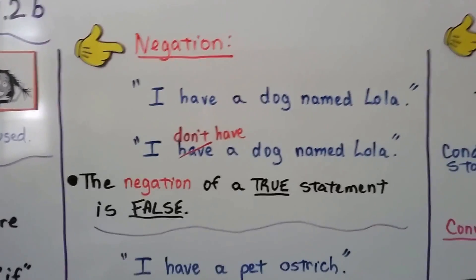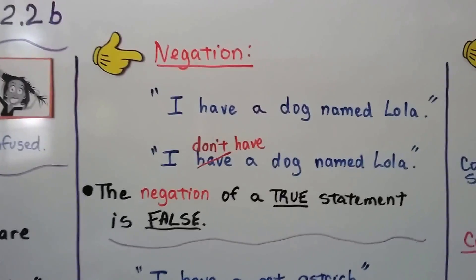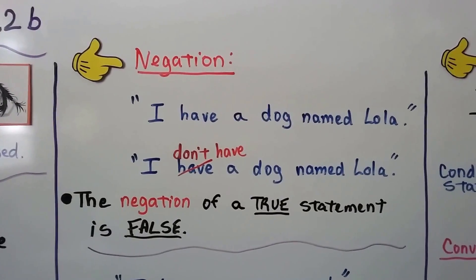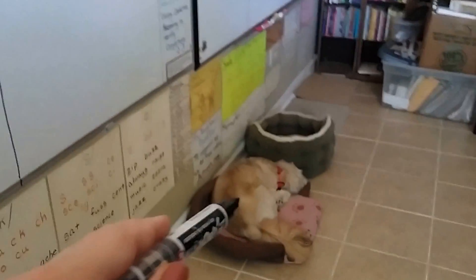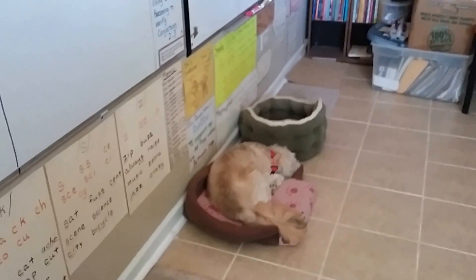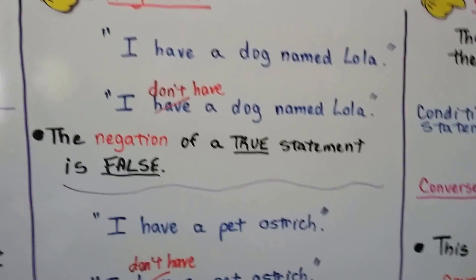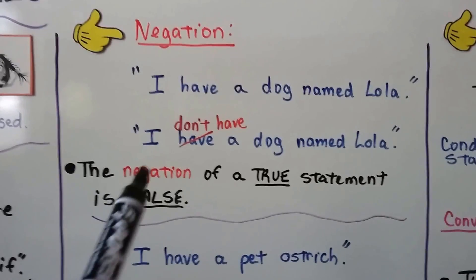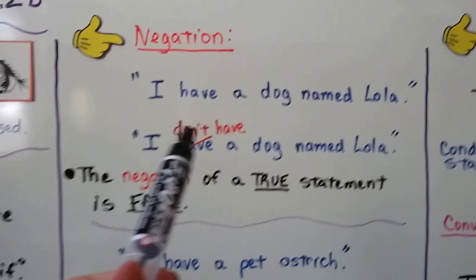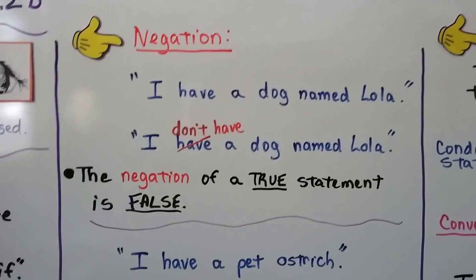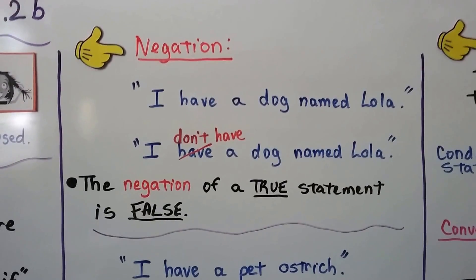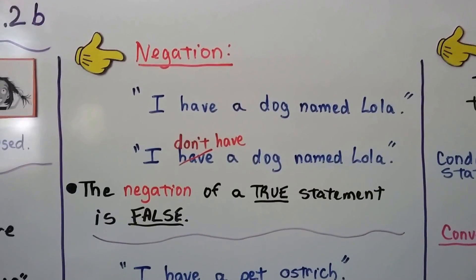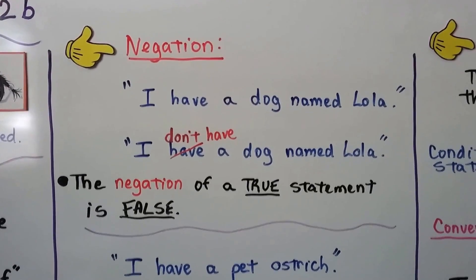Negation. Here we have a true statement: I have a dog named Lola. That's a true statement — I do have a dog named Lola; she's right there. To negate this true statement, we turn 'have' into 'don't have': I don't have a dog named Lola. The negation of a true statement is false — saying I don't have a dog named Lola is false, because I do.